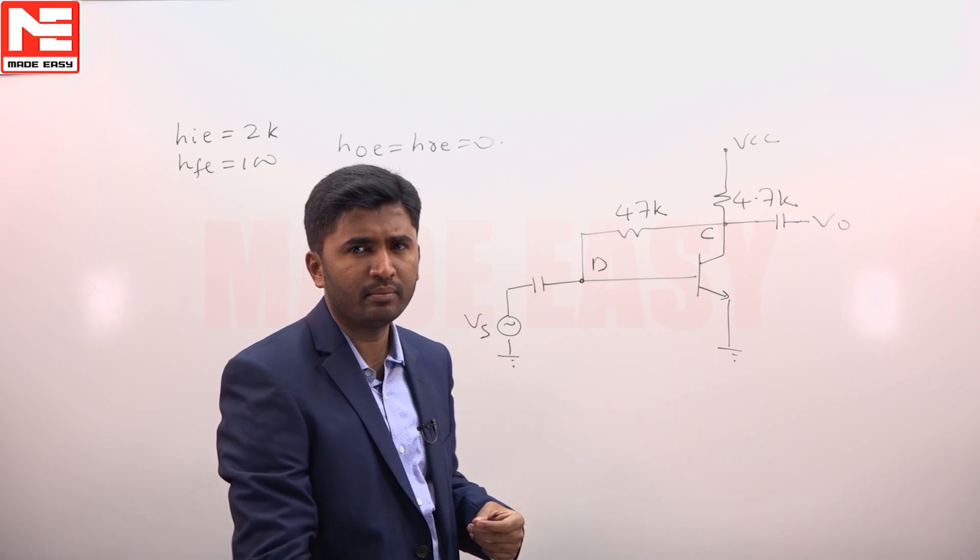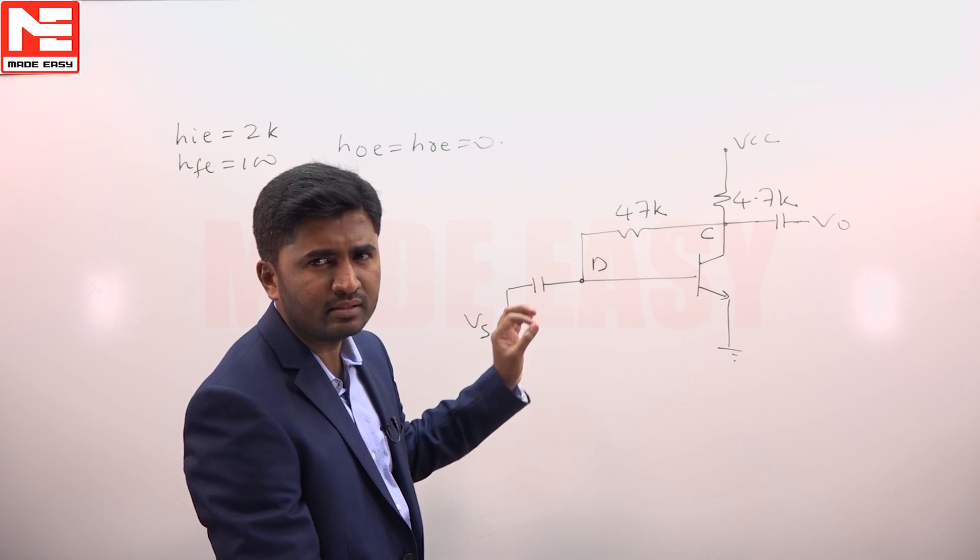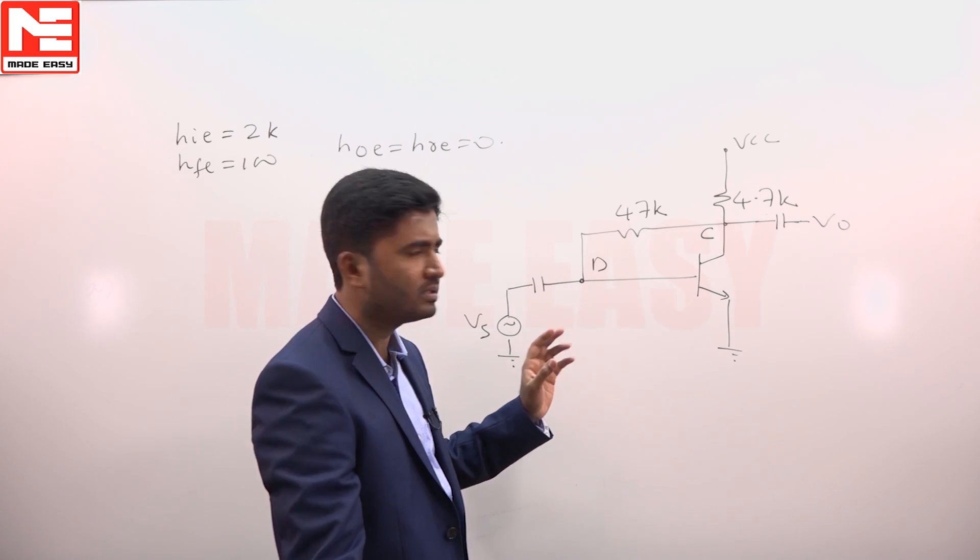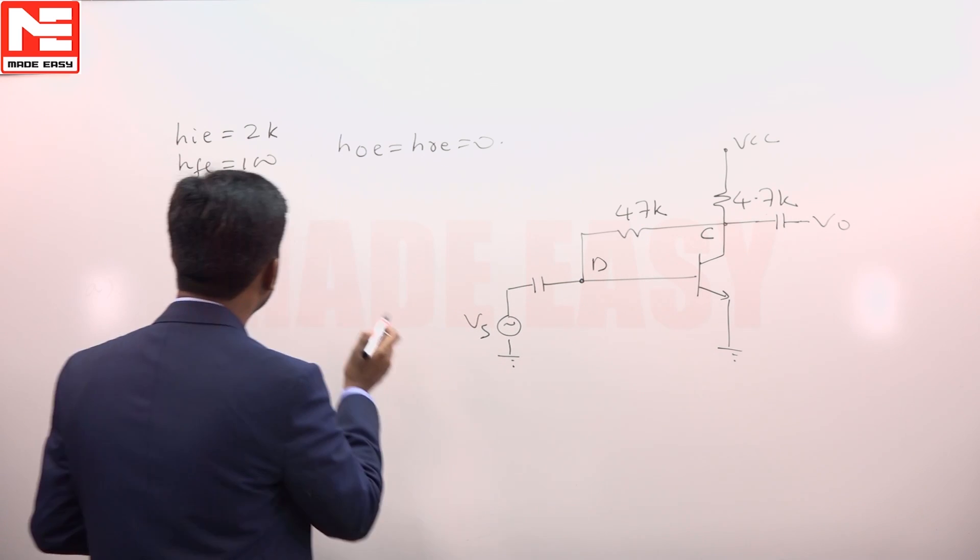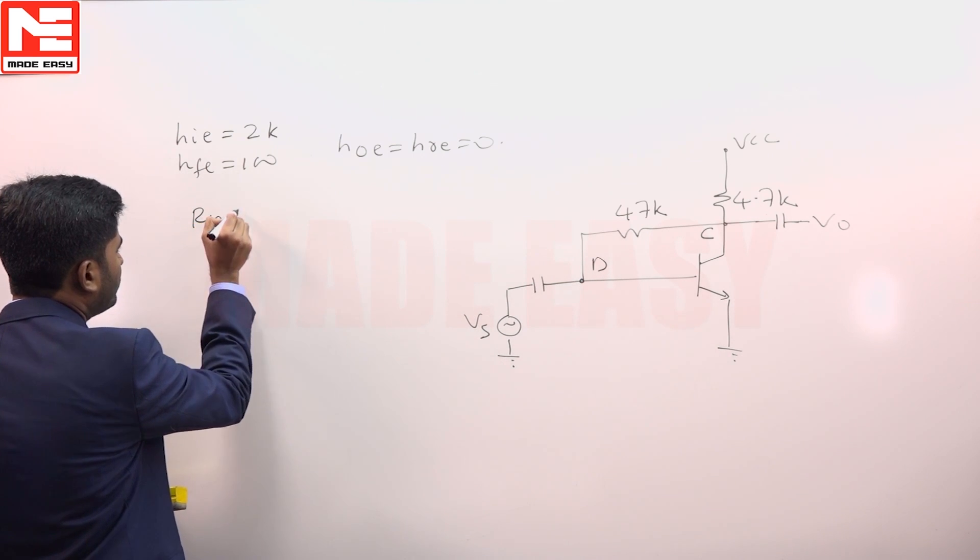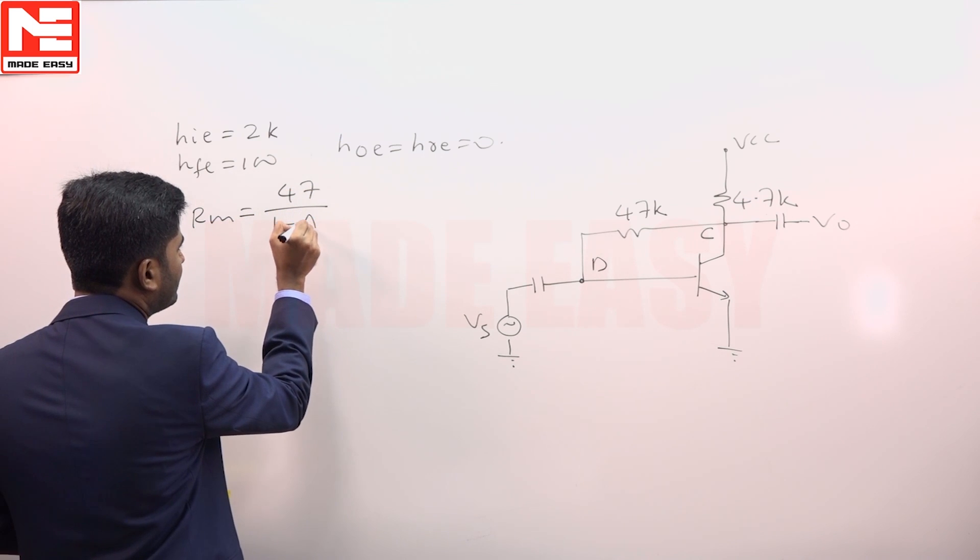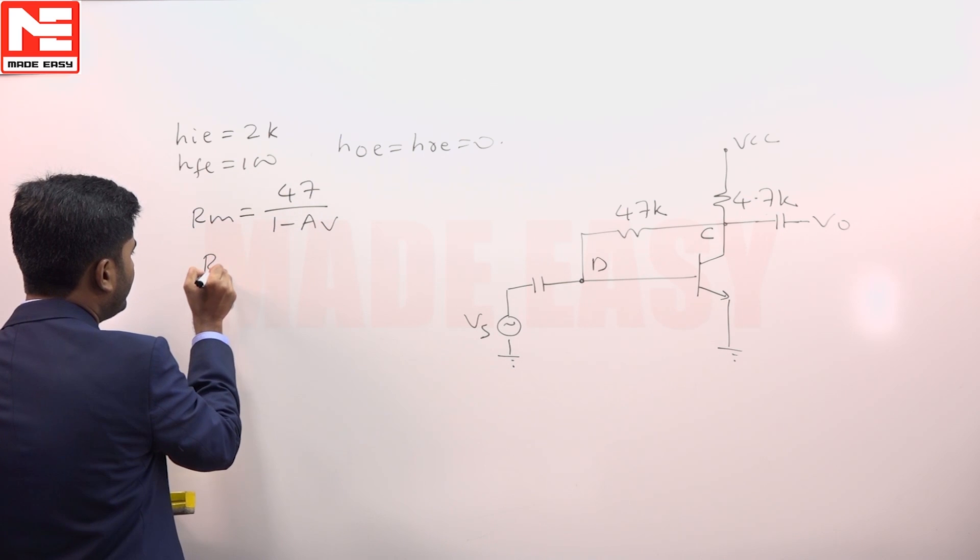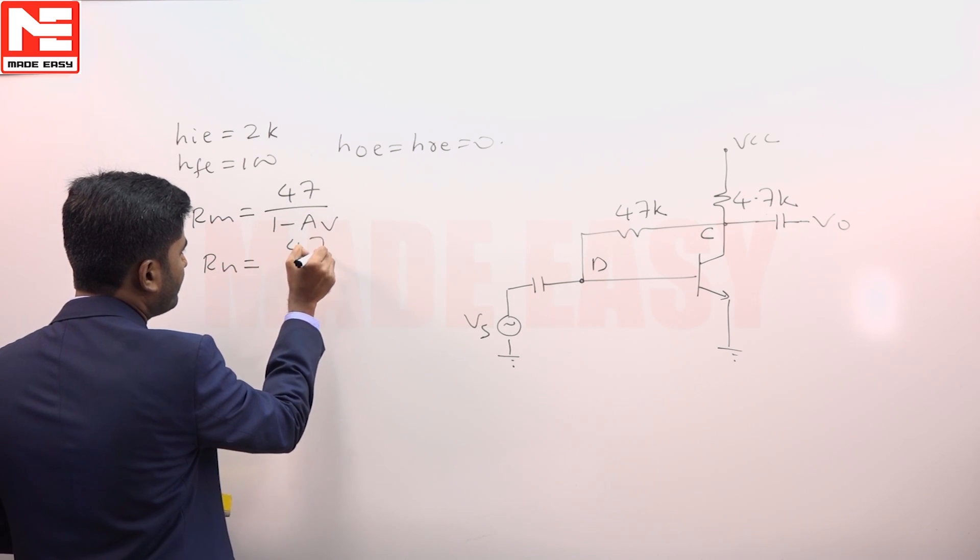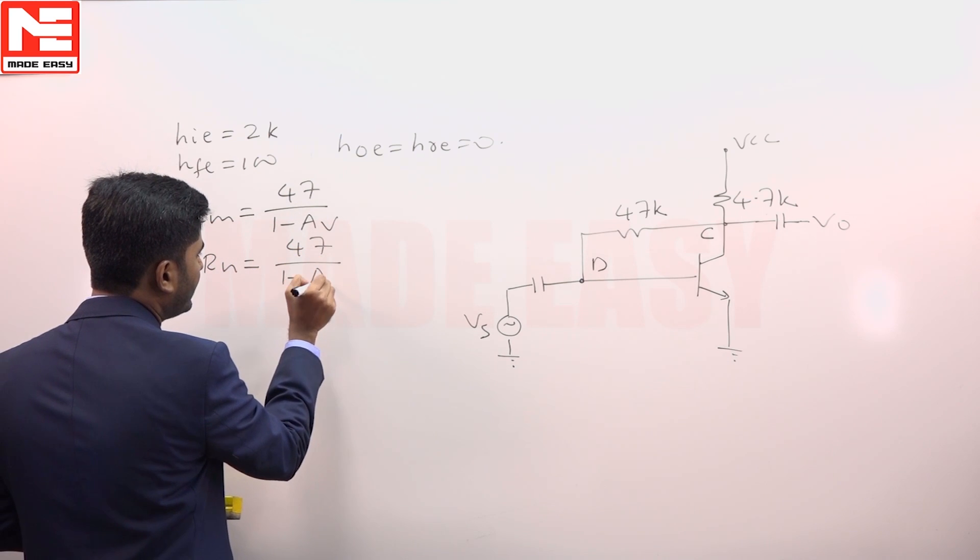Using Miller's theorem, that 47k resistor can be replaced with two resistances which we name as R m and R n. That R m will be equal to 47 divided by 1 minus A v, and R n will be equal to 47 divided by 1 minus 1 by A v.